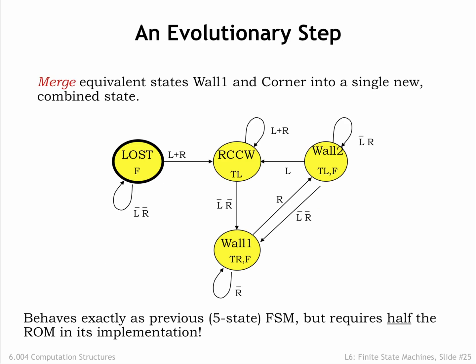This gives us the 4-state FSM shown here, where we've called the single merged state wall 1. This smaller, equivalent FSM behaves exactly as the previous 5-state FSM.